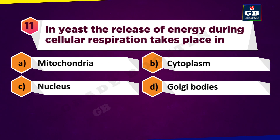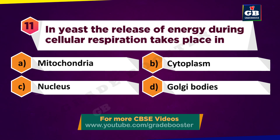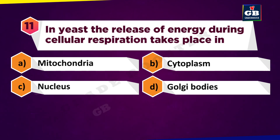In yeast, the release of energy during cellular respiration takes place in: A. Mitochondria, B. Cytoplasm, C. Nucleus, D. Golgi apparatus.